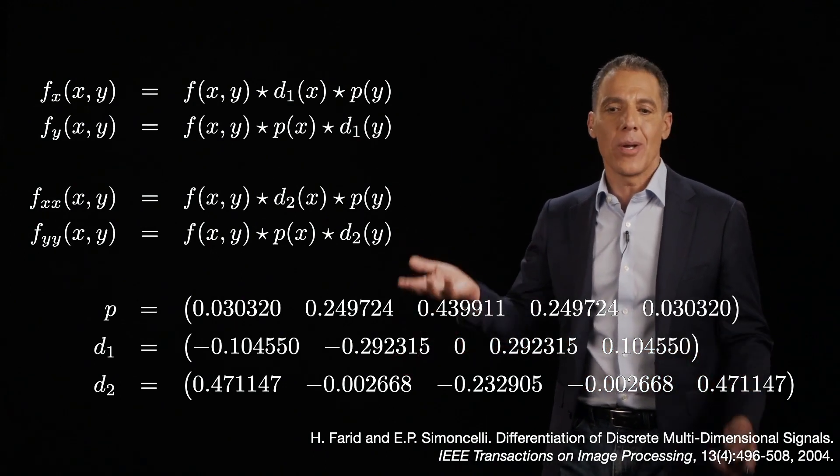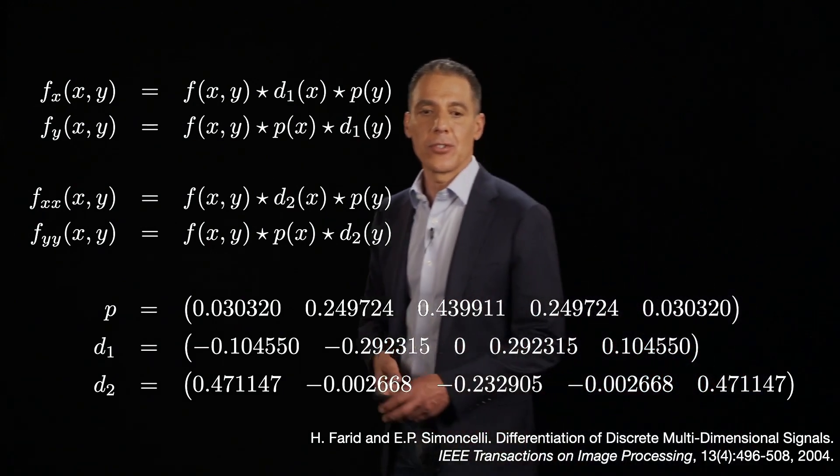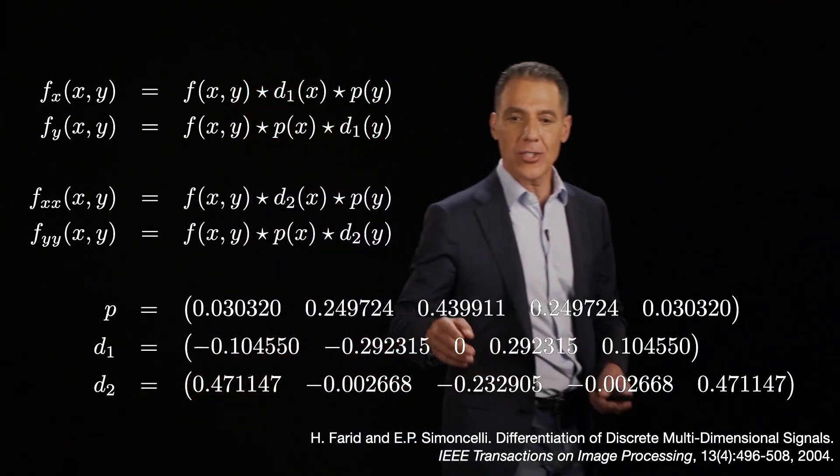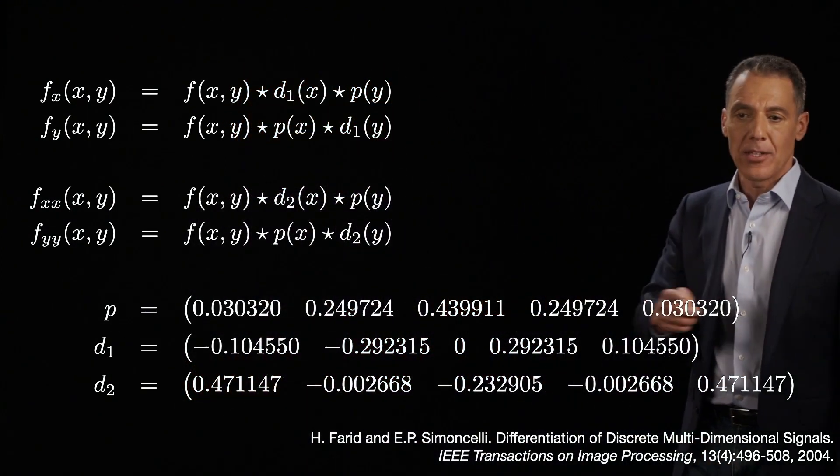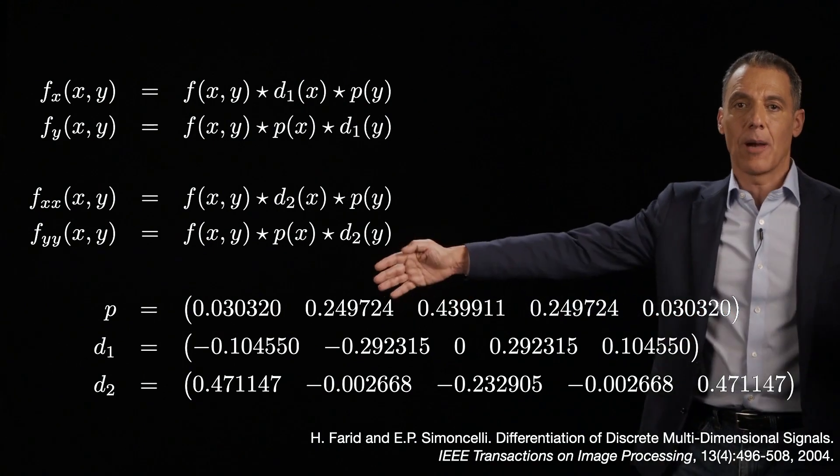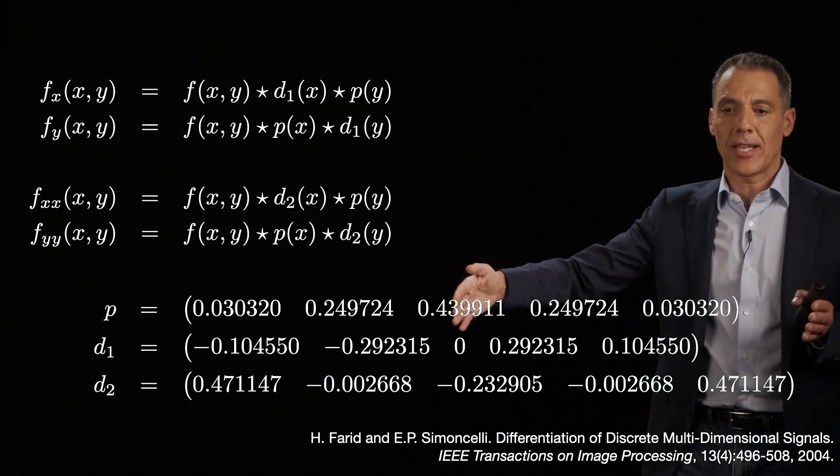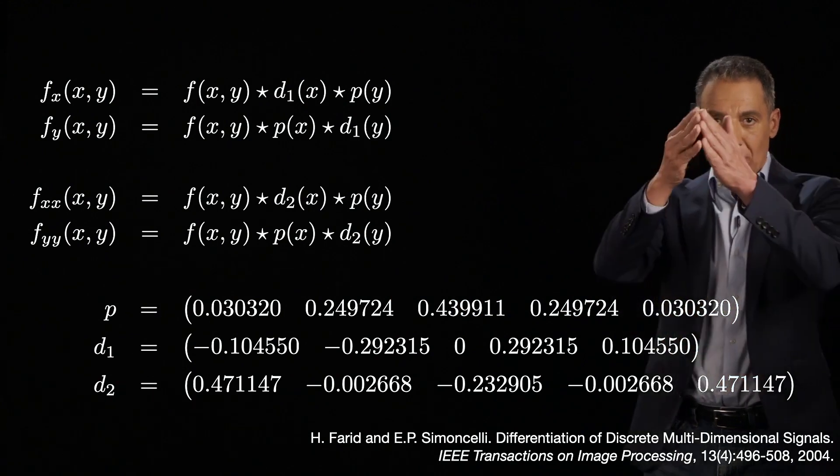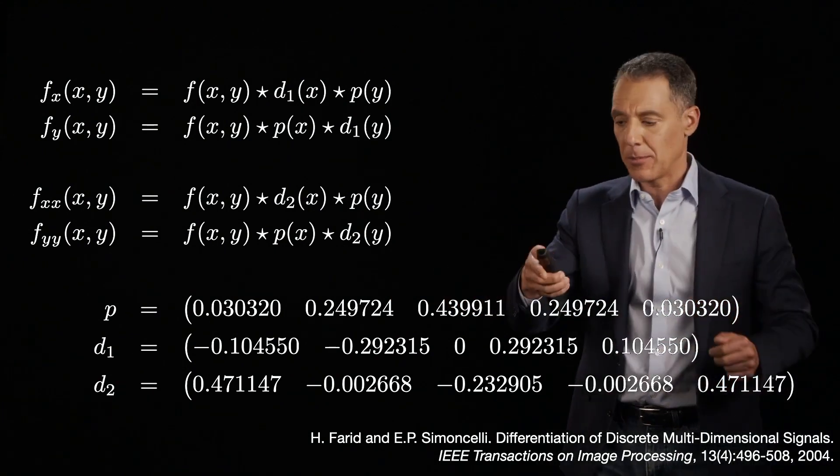here's all you really need to know, is that these are your derivative filters. P is this filter right here. And notice, again, that it is unit sum. And notice that it is symmetric. The first and last value are the same. The second and the fourth value are the same in the middle value. And notice also that it's a low-pass type of filter.